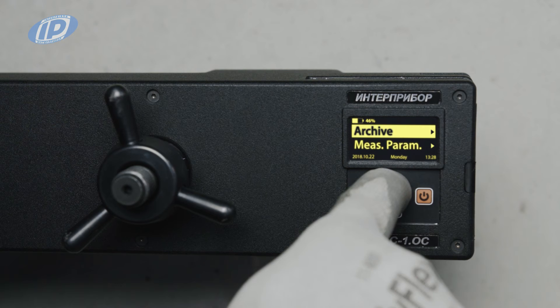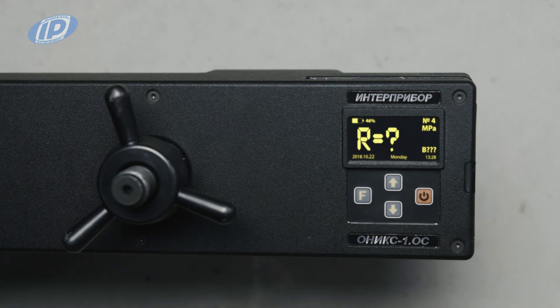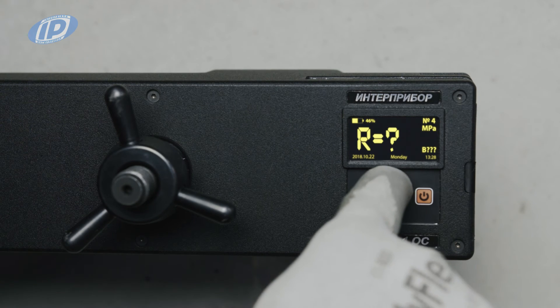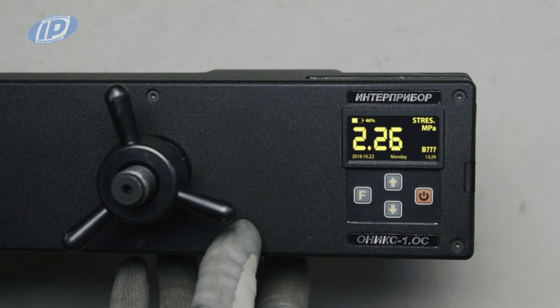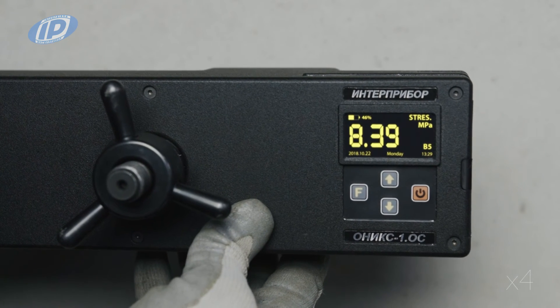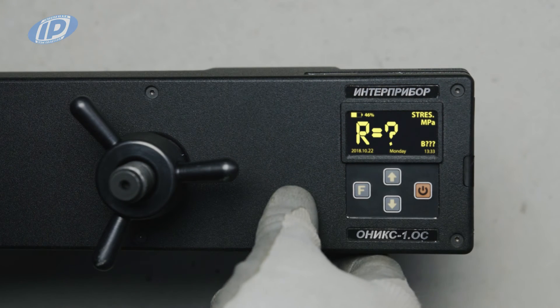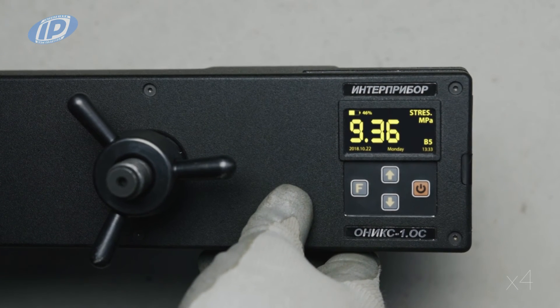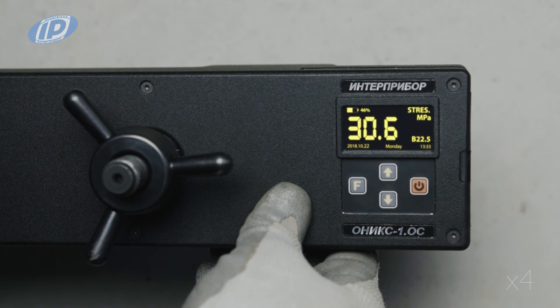Enter the menu option measurement and the selected measurement parameters will be shown briefly. To start loading, press the arrow up. The anchor will be loaded till the selected loading threshold is achieved or till a fragment of concrete is pulled out. Then the unloading process will begin and the measurement results will be shown.